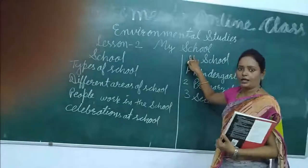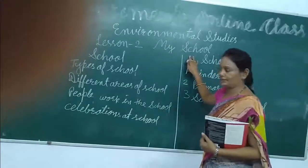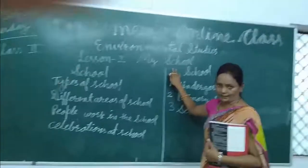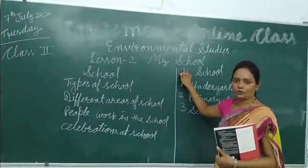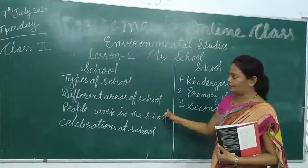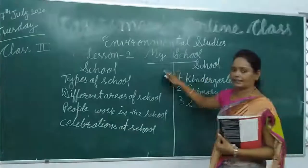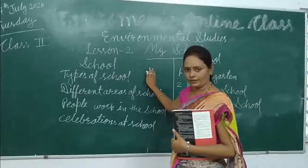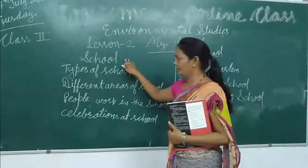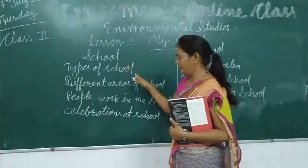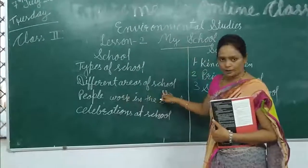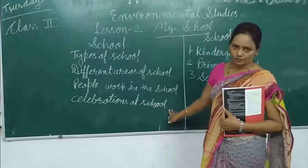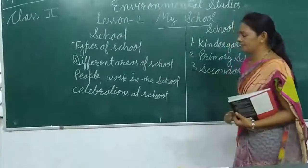In my previous video, I have read the full lesson and given 46 difficult words to underline in your book. Now I am going to explain you this lesson. With the name of this lesson, we can easily understand it is all about the school. We will see school, type of school, different areas of school, people who work in the school, and celebrations at school.